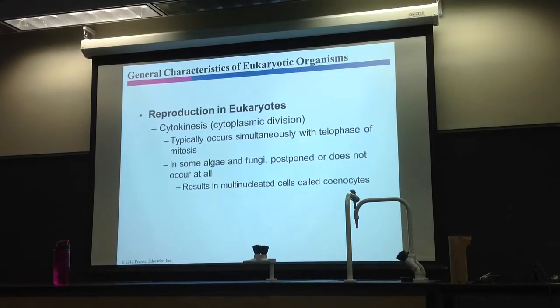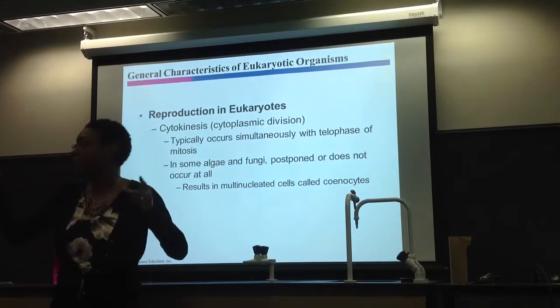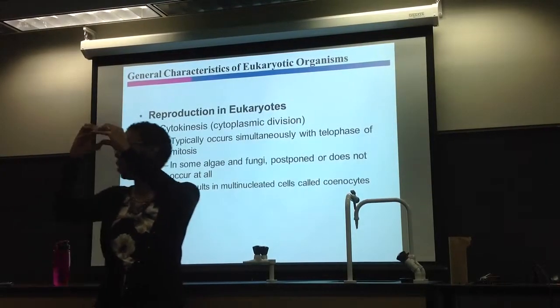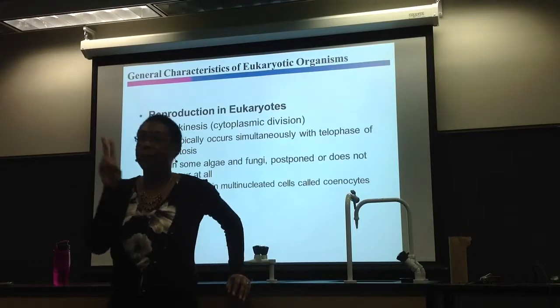In other words, cytokinesis is basically separating out of the cytoplasm. So when you separate the cytoplasm out, you in effect make two cells. So basically, at the end of mitosis, for example, you have one big cell with two nuclei.